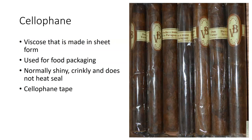Then we have cellophane. Cellophane is basically viscose that is made in a sheet form, normally used for packaging. Cellophane is normally shiny, crinkly, and doesn't heat seal well. When you buy things in cellophane packages, normally the cellophane is glued together. We make what we call cellophane tape, which is scotch tape. This is almost a plastic-like material, very good for putting things into because it allows for proper moisture regulation.